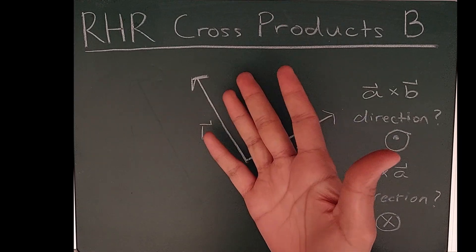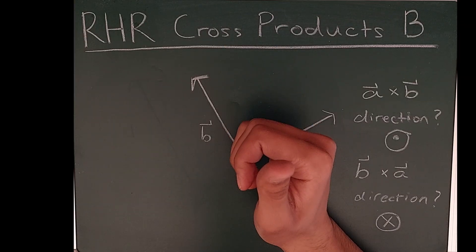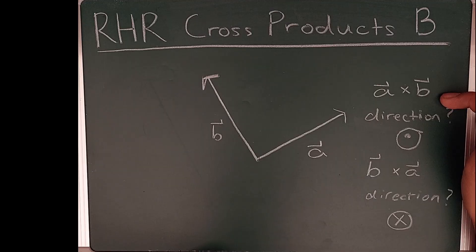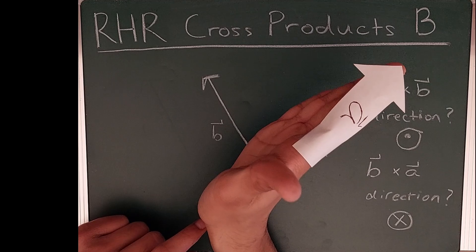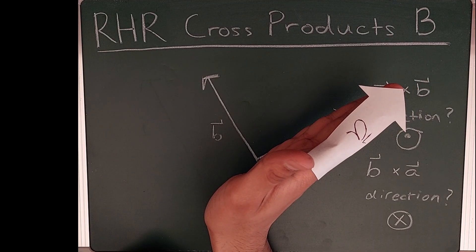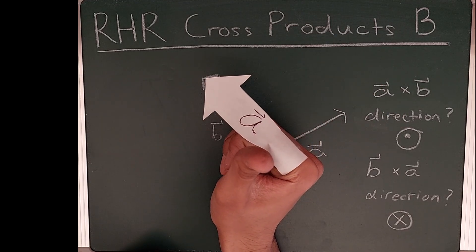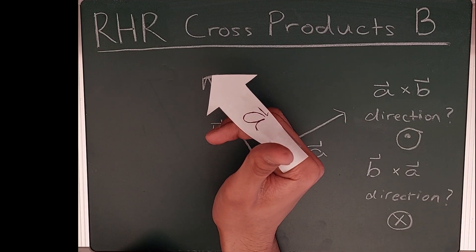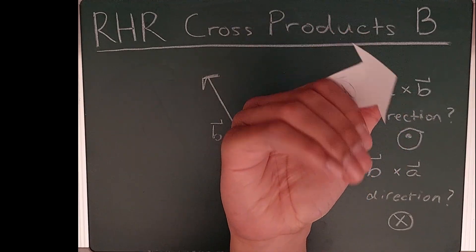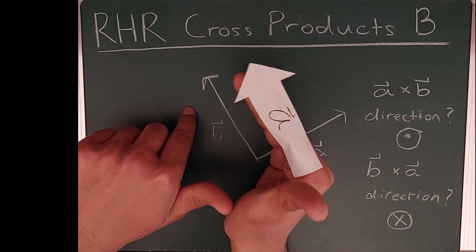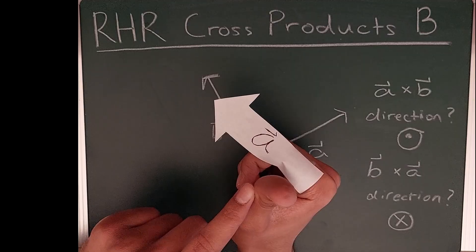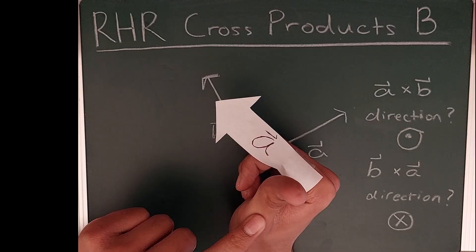The next right-hand rule is used by those who prefer to curl their fingers and look at the direction of their thumb. To determine the direction of A cross B, align all four fingers — excluding your thumb — in the direction of A. Then curl those fingers in the direction of vector B, forming something like a fist. If you can't curl your hand, you may need to invert it. Your thumb then points out of the page — that is the direction of A cross B.